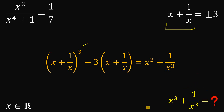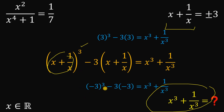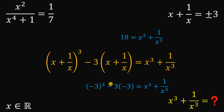Now let's substitute the values. First, using x plus one over x equals positive three: we get three cubed minus three times three, which equals twenty-seven minus nine, giving us eighteen. For x plus one over x equals negative three: we get negative three cubed minus three times negative three, which is negative twenty-seven plus nine, giving us negative eighteen.